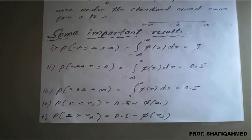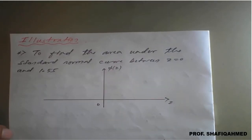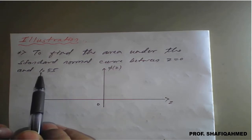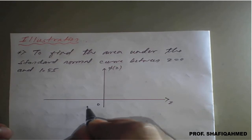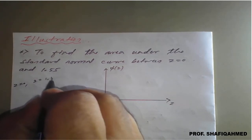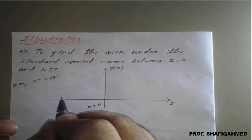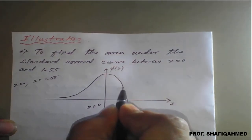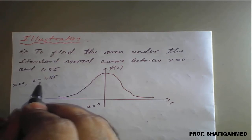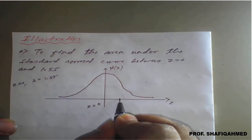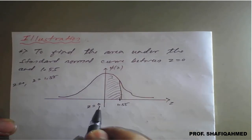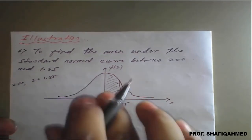Illustration: find the area under the standard normal curve between z equal to 0 and z equal to 1.55. We have two values: z equal to 0 and z equal to 1.55. z equal to 0 means the center of the curve. I will draw a bell-shaped normal curve. z equal to 0 is exactly the center — the area is 0.5 on each side — and z equal to 1.55 will be to the right. We draw a vertical line at 1.55 and shade the area from z equal to 0 to z equal to 1.55 on the positive side.